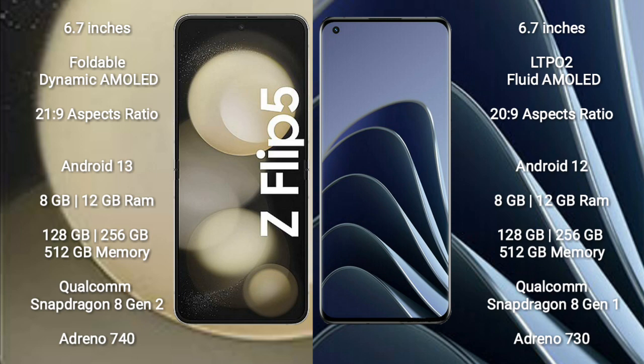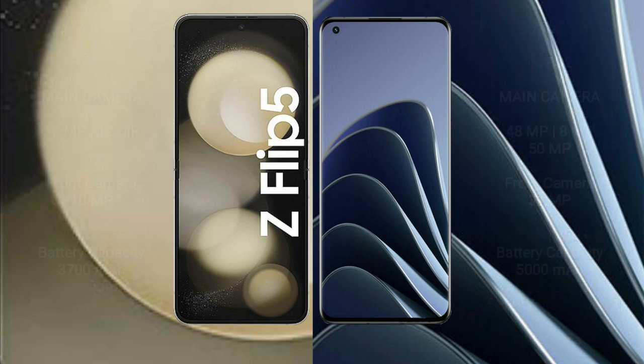Samsung Galaxy Z Flip 5 comes with 8GB or 12GB RAM and 128GB, 256GB, or 512GB internal storage, with a Qualcomm Snapdragon 8 Gen 2 processor and Adreno 740 GPU. OnePlus 10 Pro comes with 8GB or 12GB RAM and 128GB, 256GB, or 512GB internal storage, with a Qualcomm Snapdragon 8 Gen 1 processor and Adreno 730 GPU.